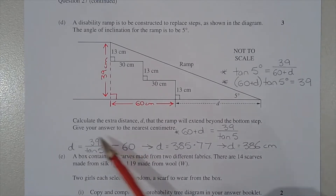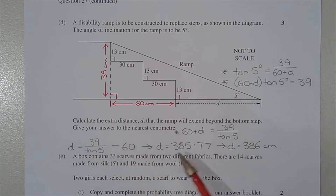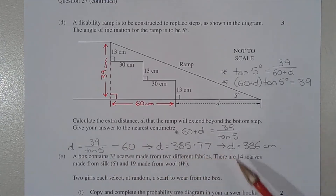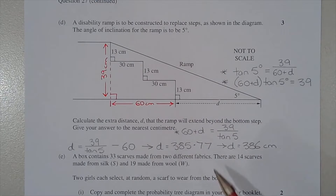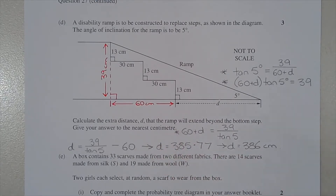Evaluating this expression gives d = 385.77..., so to the nearest centimetre, d equals 386 centimetres.